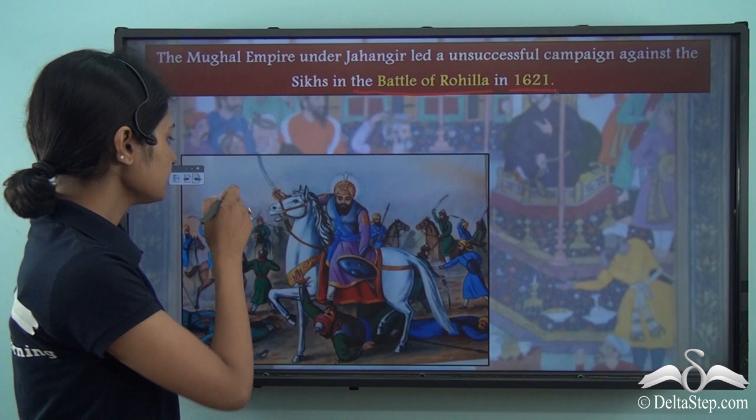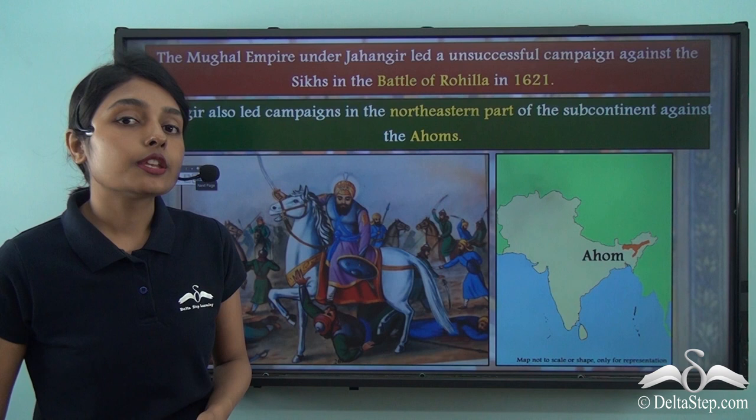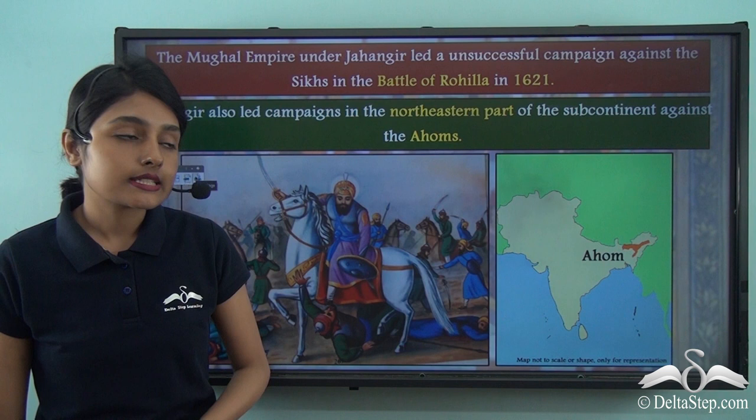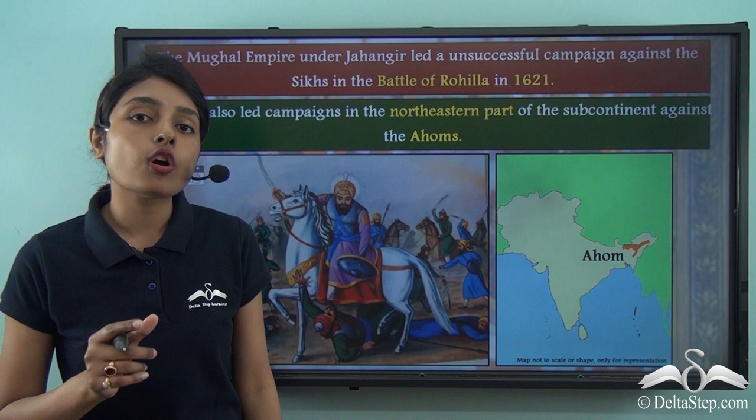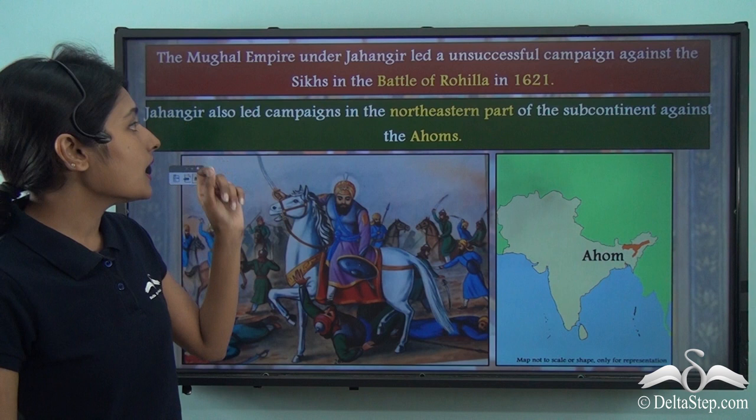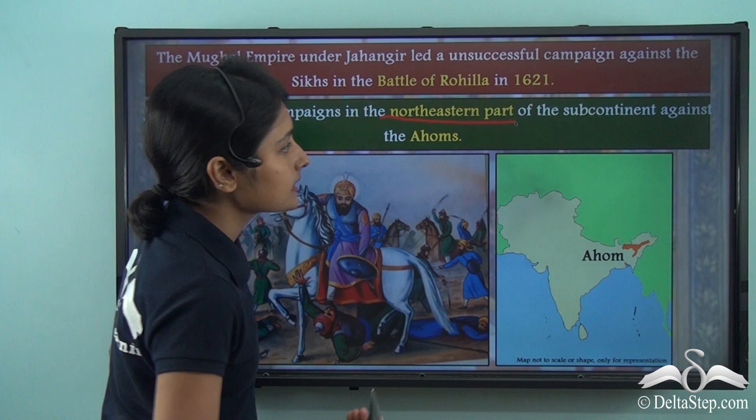Jahangir also wanted to extend the Mughal Empire to the north-eastern part of the Indian subcontinent, where a particular group called the Ahoms was very dominant. He therefore also launched campaigns in the north-east against the Ahoms.